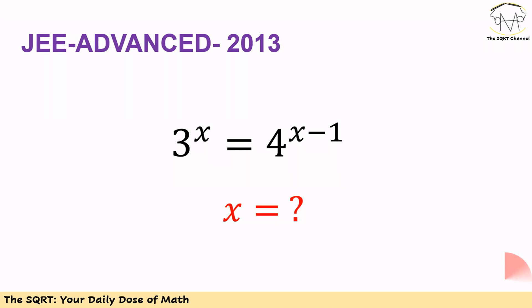In this problem we have 3 to the power of x is equal to 4 to the power of x minus 1 and we want to find x.